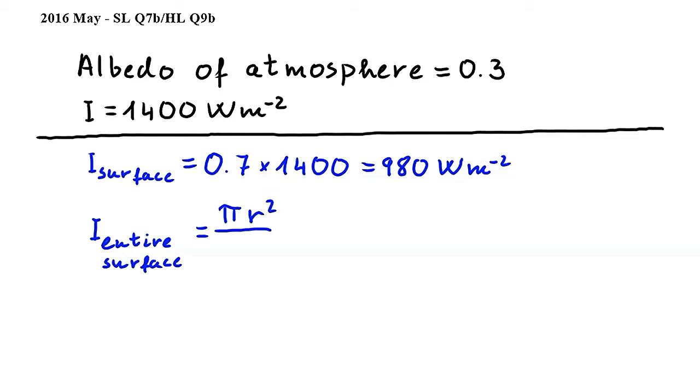We will have to divide this by the entire surface area of the earth. Since the earth is a sphere, its surface area can be calculated by 4πr². And since we're looking for the intensity we will multiply this by 980. We can cancel πr² from the numerator and denominator.